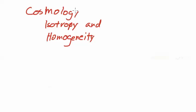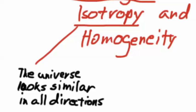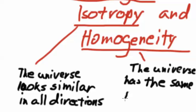I'd like to discuss a little concept in cosmology called isotropy and homogeneity. Isotropy is the idea that the universe looks similar in all directions, and homogeneity is the idea that the universe has the same properties everywhere.